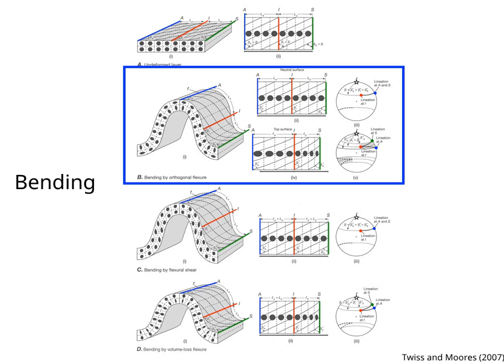Also the angle the lineation makes with the fold axis varies, from beta A at the anticlinal hinge, to beta L at the inflection line, to beta S at the synclinal hinge.